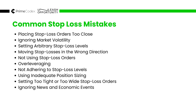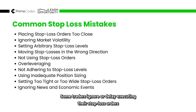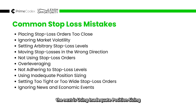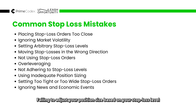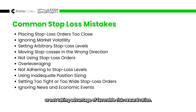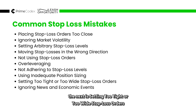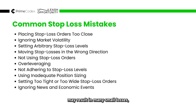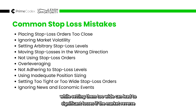Next is not adhering to stop loss levels. Discipline is crucial in trading. Some traders ignore or delay executing their stop loss orders when the market moves against them, hoping for a reversal. This can lead to catastrophic losses if the market continues to move in the wrong direction. Always adhere to your predetermined stop loss level. The next is using inadequate position sizing — position sizing is closely related to stop loss placement. Failing to adjust your position size based on your stop loss level can result in risking too much capital in a single trade or not taking advantage of favorable risk-reward ratios. Setting stop loss orders too tight may result in many small losses, while setting them too wide can lead to significant losses when the market reverses.